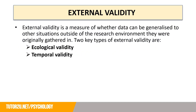The other type of validity we're going to look at is external validity, and this is to do with outside of the experiment — so internal is within the experiment, external is outside. External validity is a measure of whether data can be generalised to other situations outside the research environment they were originally gathered in. Two key types of external validity are ecological validity and temporal validity.